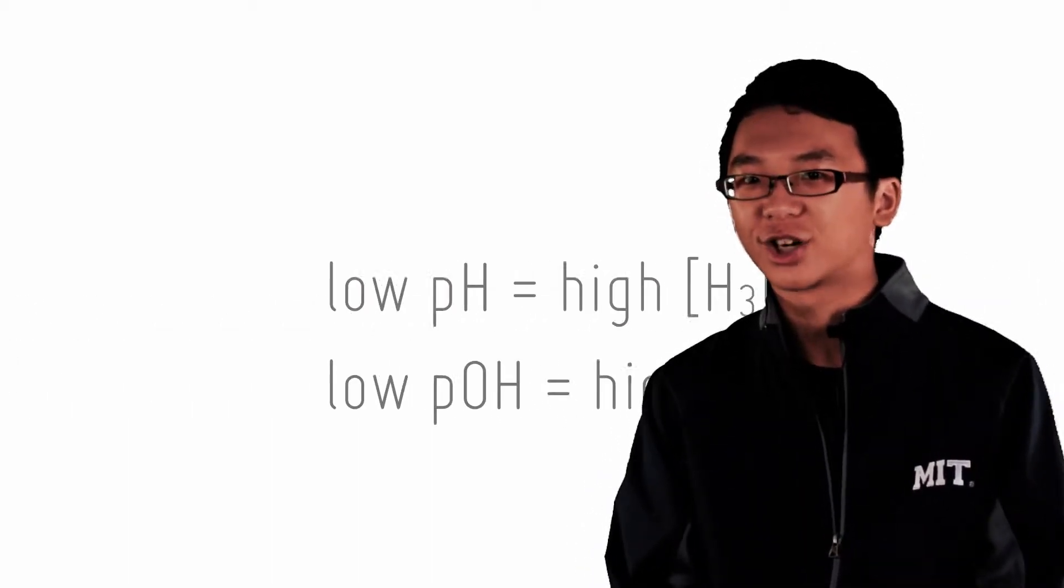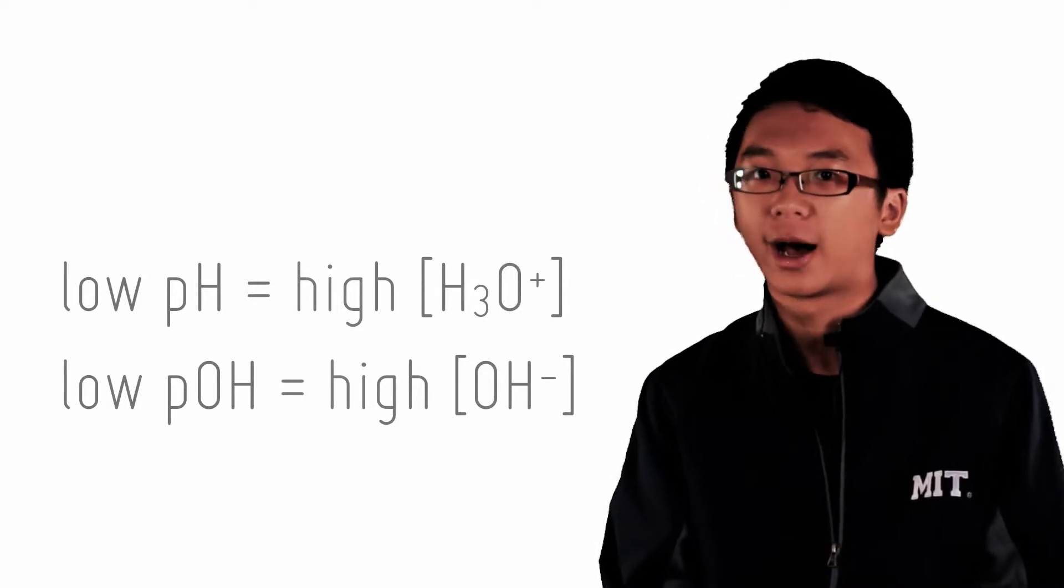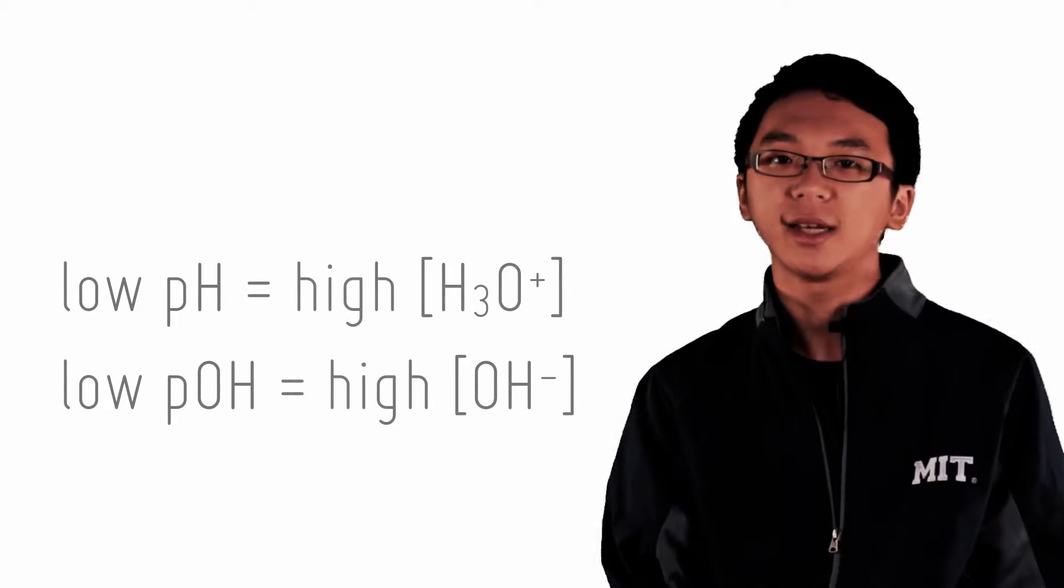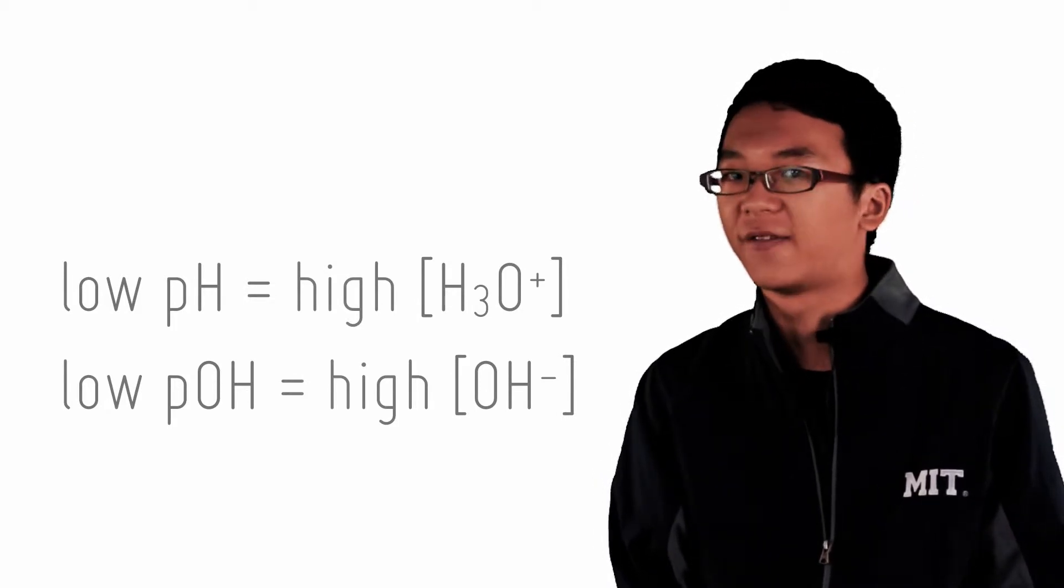Recall that pH and pOH are indicators of concentration of hydronium ions and hydroxide ions respectively. High pH and high pOH is an indicator of low concentration and vice versa.